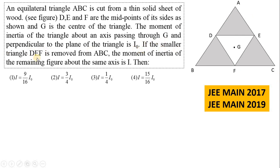If the smaller triangle DEF is removed from ABC — that is, we make a triangular hole by cutting and removing the DEF portion — DEF is also an equilateral triangle. Then the moment of inertia of the remaining figure about the same axis is I.